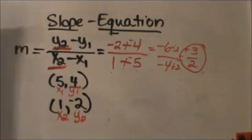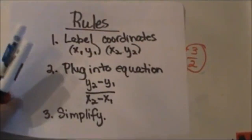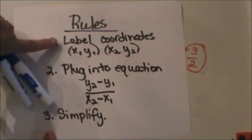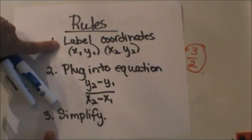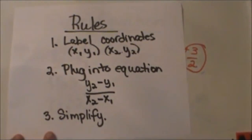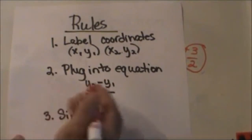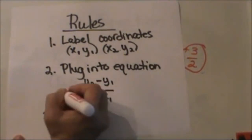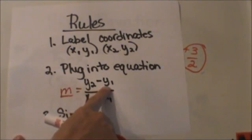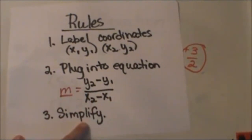The easiest way to work the slope equation is the first thing you can do is I like to label my coordinates as x1, y1, x2, y2. Then I just take those and plug them into the equation for slope and yes this is for m, m is for mountains, mountains have slope. y2 minus y1 over x2 minus x1 and then I just simplify that.